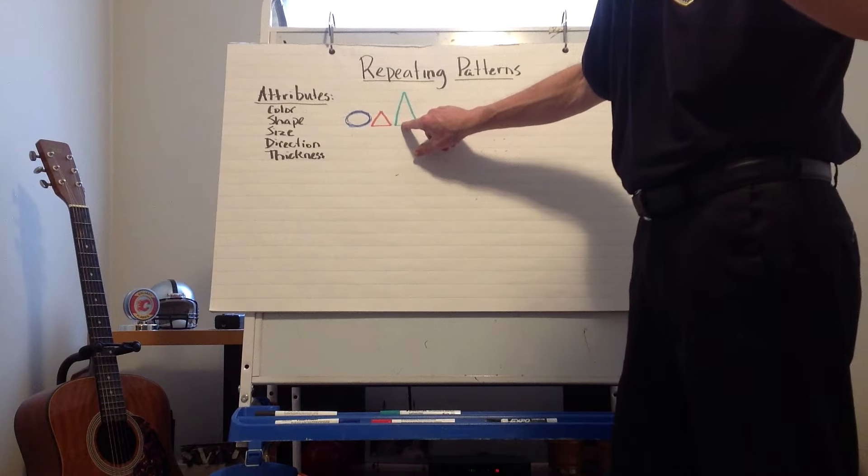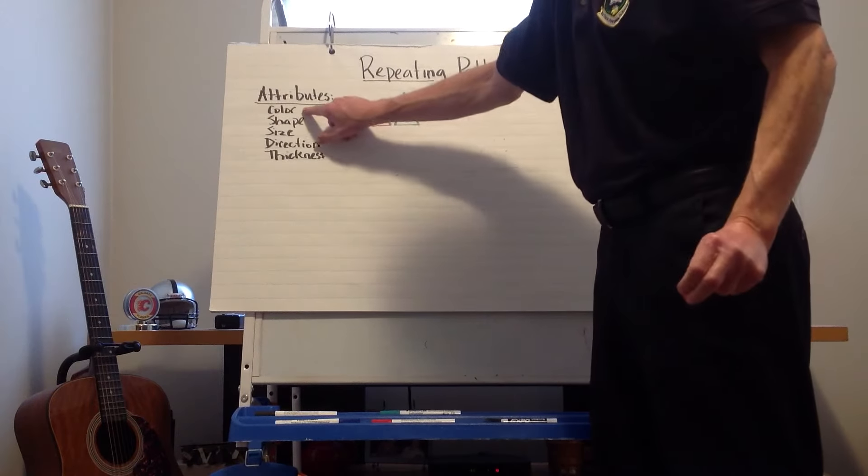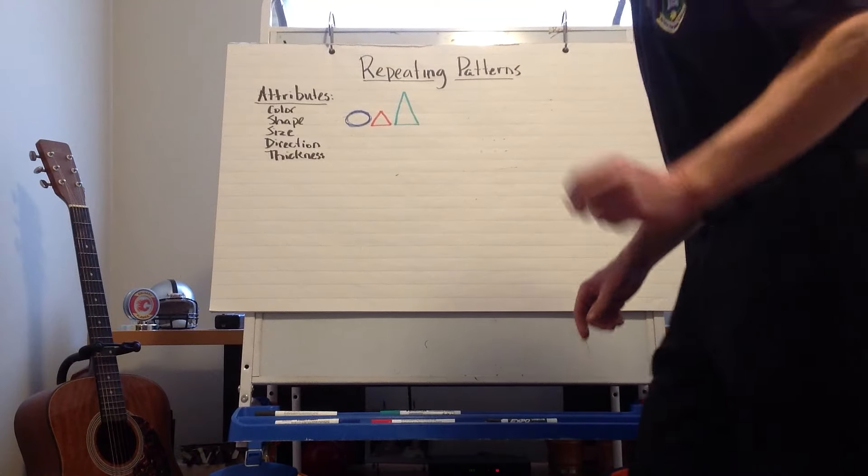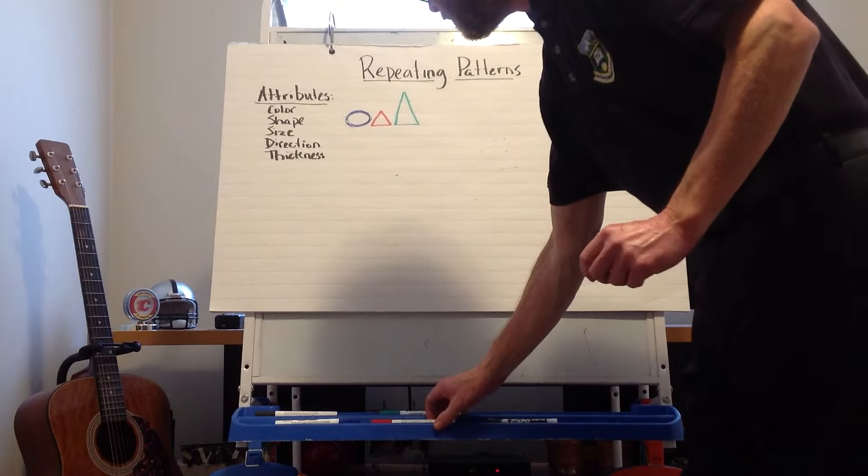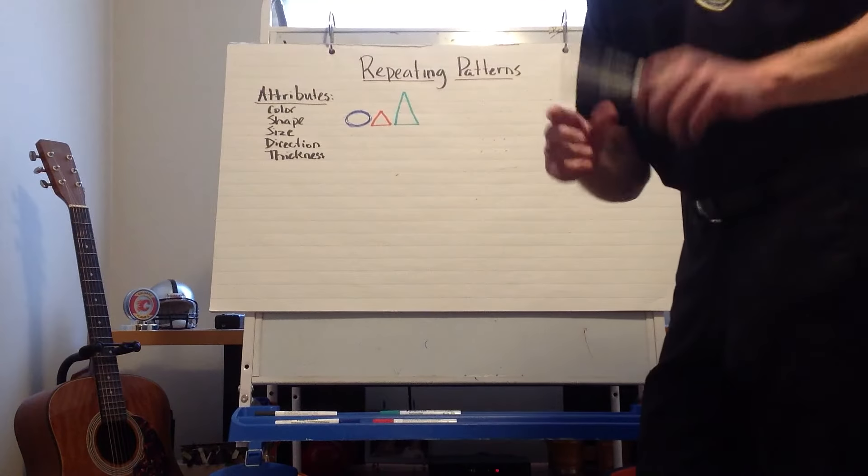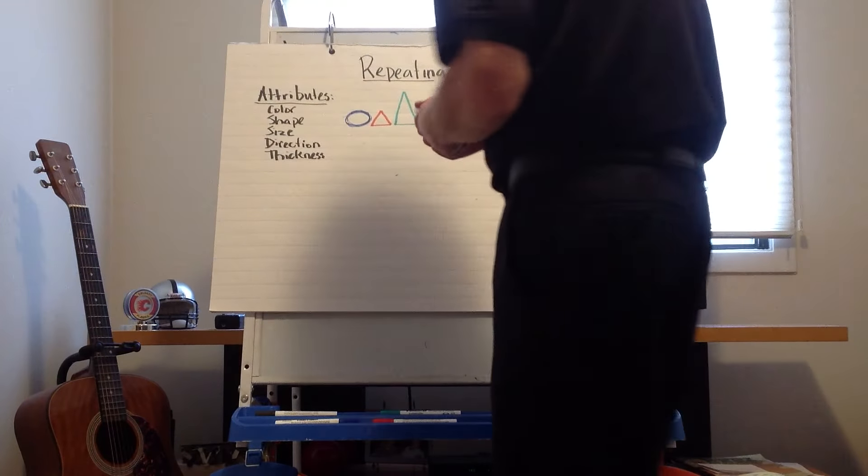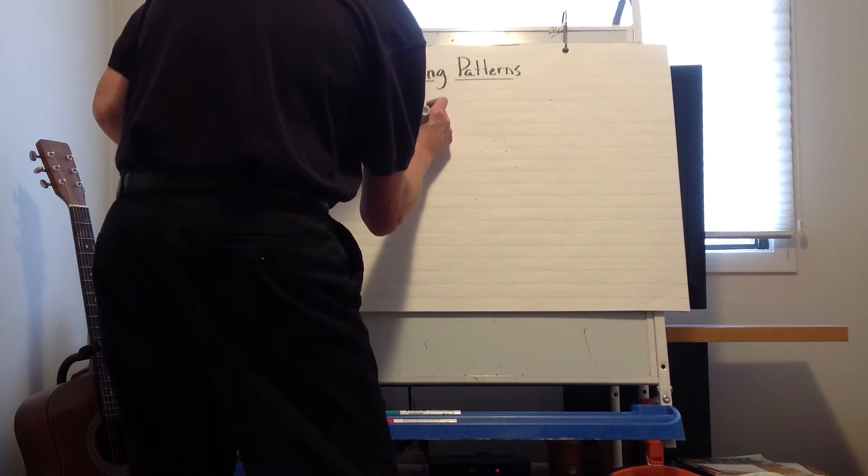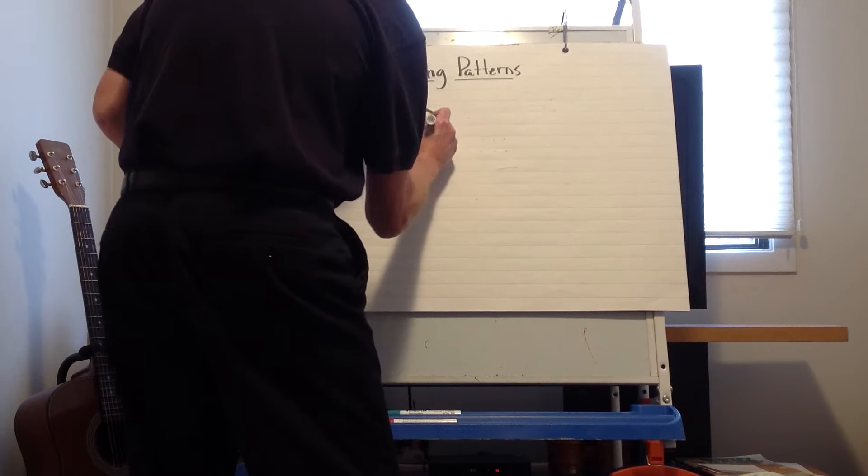So now all I have to do to add to this pattern to get all four of these attributes in is add direction. Here's what I can do. I can take my marker and I'm going to use black here. I'm going to change color again. I'm going to have a four color pattern and I can put a triangle basically on its side.